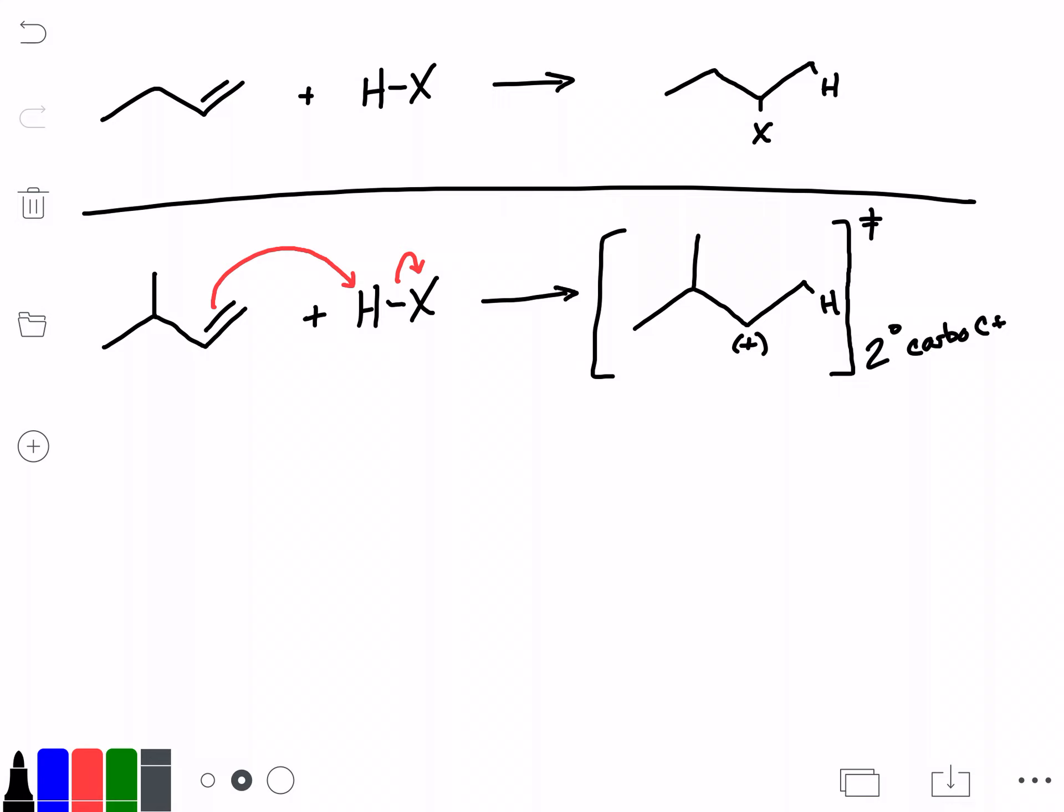But what we can notice is that we have the possibility to create an even more stable tertiary carbocation. And what happens here is called a hydride shift. Essentially, when we have a scenario where we have a hydrogen or a methyl group next to a carbocation, we can actually have that hydride or methyl group scoot next door to create a more stable transition state.